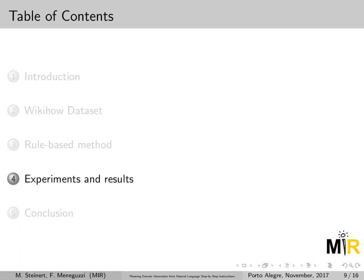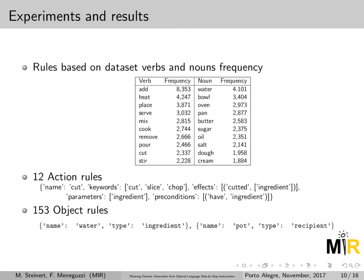Talking about our experiments and results, first I will talk about our environment setup. Given that we are operating over the cooking recipes domain, we start by performing a statistical analysis over our dataset, specifically in terms of term frequency of verbs and nouns. We have here a top 10 verbs and nouns based on frequency, and we use that information to generate our rules.